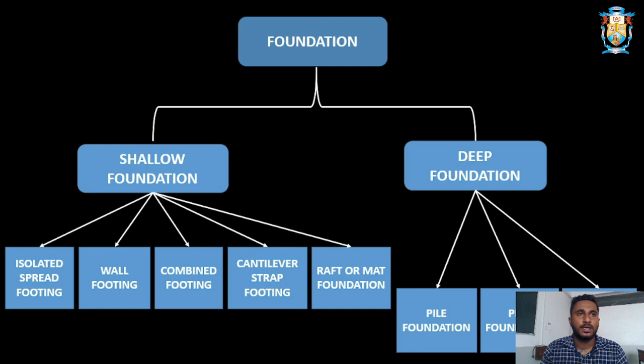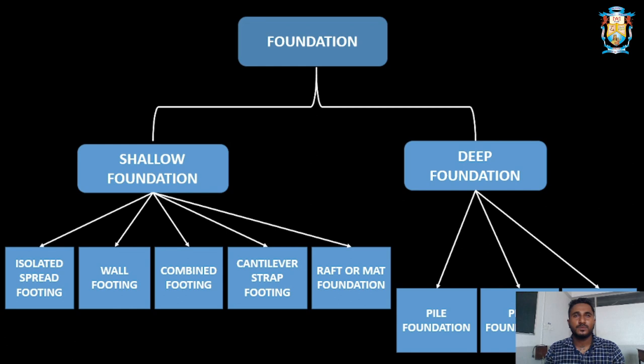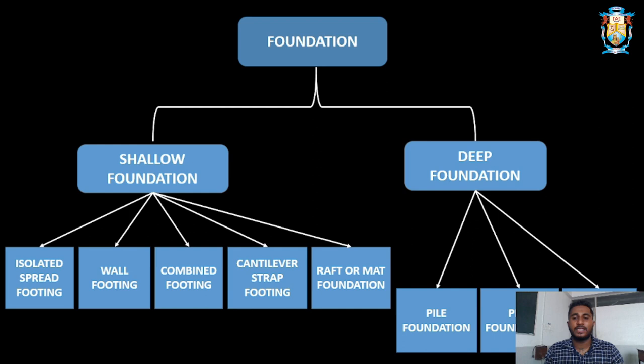Talking about foundation types, there are mainly two types: shallow foundation and deep foundation. In a shallow foundation, the width is more than the depth. In a deep foundation, the depth is more than the width. That is one key difference between the two.